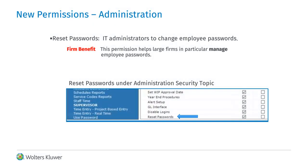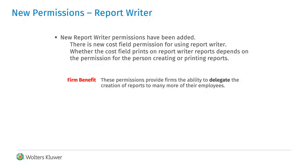For large firms in particular, we have added security to allow an IT designate in the firm to set up passwords for employees. A new report writer permission includes show cost. You can use this to create reports that include cost, but to determine who can create and print reports that include the cost amount. If an employee does not have permission to show cost on report writer reports, these reports will mask the cost field on the report.